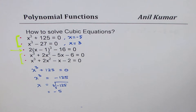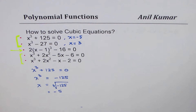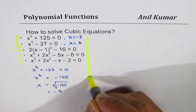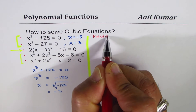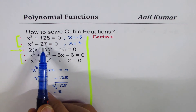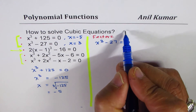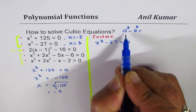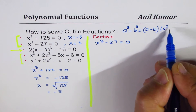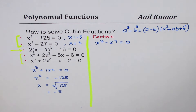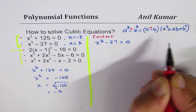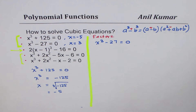That was the straight equation method. The second method is using factors. For x³ - 27 = 0, we use the identity: a³ - b³ = (a - b)(a² + ab + b²). And if we have a plus sign, the signs change accordingly.